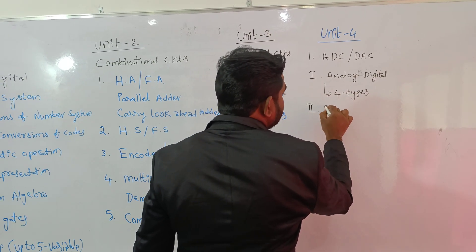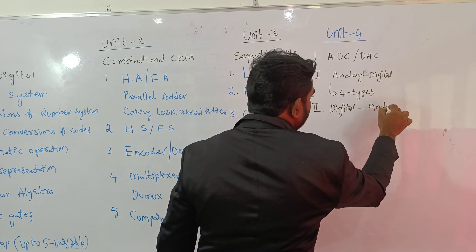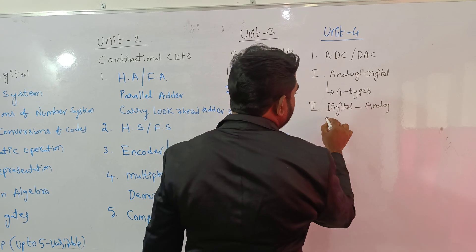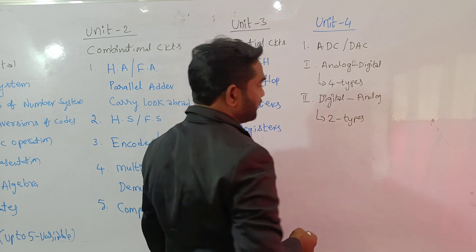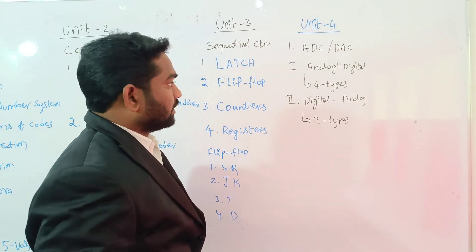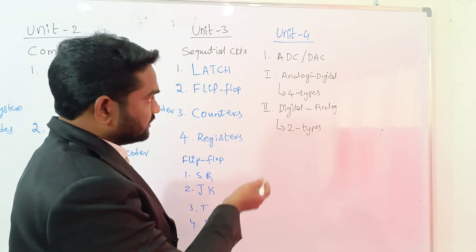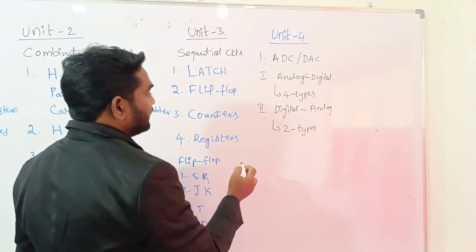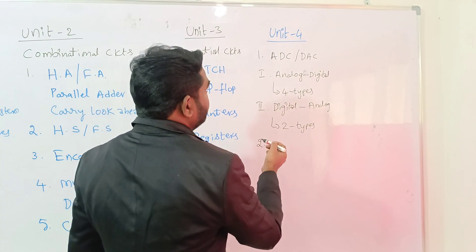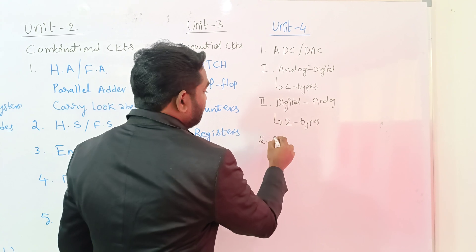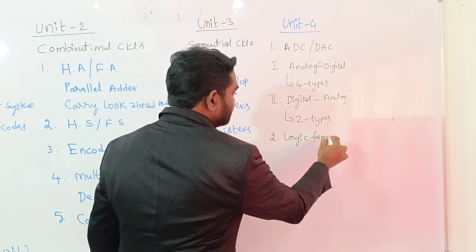In ADC and DAC we are going to learn about Ladder type, Flash type, SAR type, and Successive Approximation type — all the types we will cover. The next concept, the second part of unit four, is Logic Families.